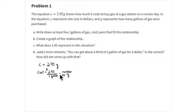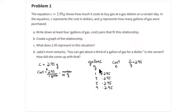You multiply that unit rate times the number of gallons, so the total cost is two dollars and ninety-five cents times the number of gallons. Each gallon costs two dollars and ninety-five cents, so however many gallons you purchase, you multiply that number by two ninety-five. Here are four examples: one gallon, three gallons, five gallons, and nine gallons of gas.